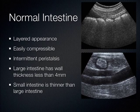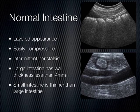Large intestine has wall thickness up to 4 millimeters. Small intestine is less than that — somewhere between 3 and 4 millimeters. If you ever have wall thickness greater than 4 millimeters, no matter what you're looking at, that's an abnormal disease state of that bowel, whether it's colitis or something else. Just measure the wall.